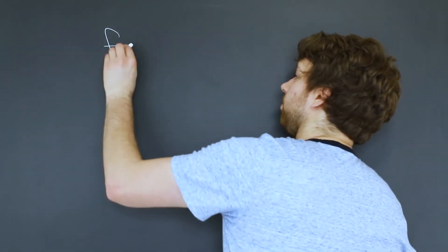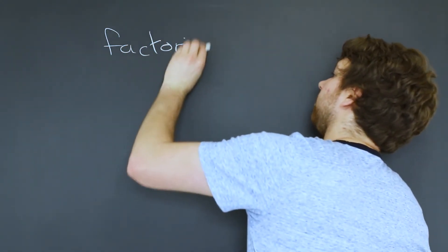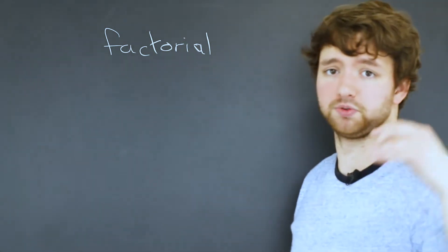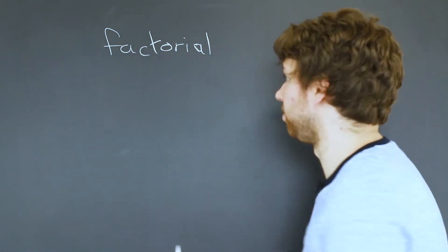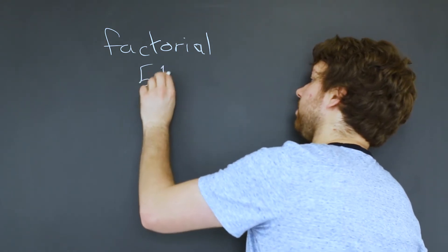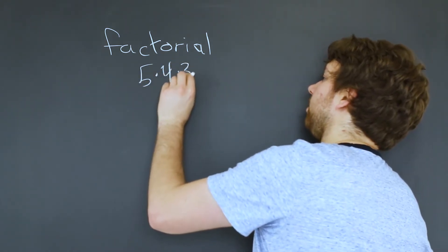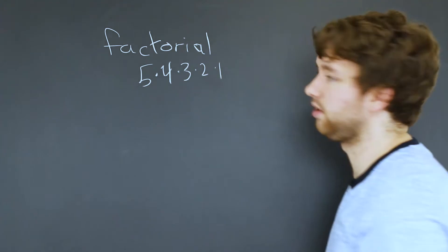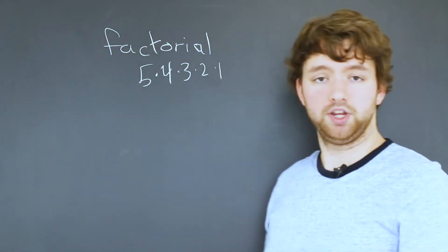For example, we could create a function factorial. Basically in math, factorials are when you take a number and multiply it by all the numbers lower than it. So factorial 5 is equal to 5 times 4 times 3 times 2 times 1.